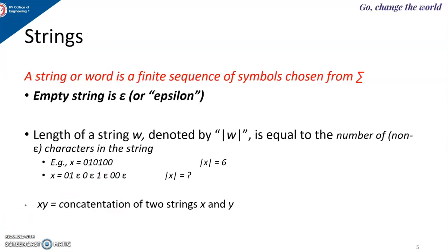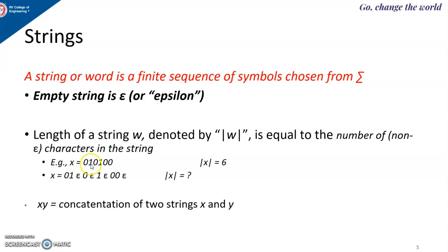The second terminology is strings. A string or a word is a finite sequence of symbols chosen from sigma. The empty string is represented by the symbol epsilon, which means it is a string containing nothing. The length of the string w is denoted by |w|, equal to the number of characters in the string. Suppose w is the string 0, 1, 0, 1, 0, 0 — then this string contains six symbols, so the length of x is equal to six.